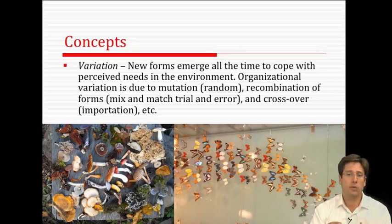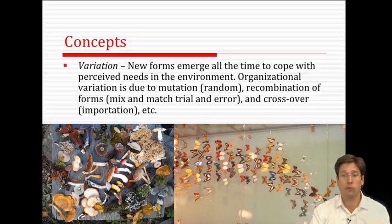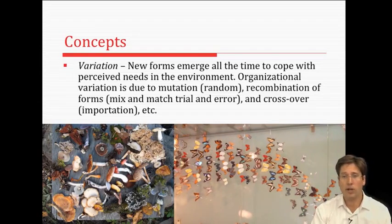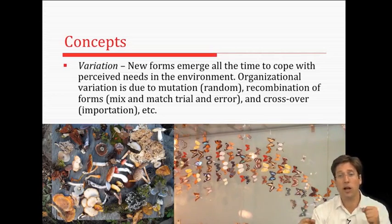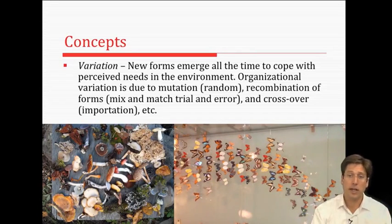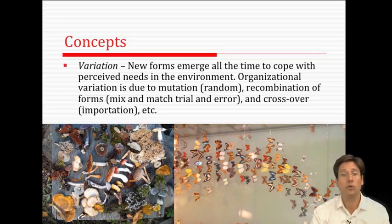In other cases, variation can occur through recombination of forms — they mix and match old ideas together. A third type is a crossover of forms. In biology this is a crossover in chromosomes, but in organizations it occurs when one idea is taken from one domain, say education, and applied in another, say the beverage industry. So biology metaphors are extended in terms of variation into organizations.